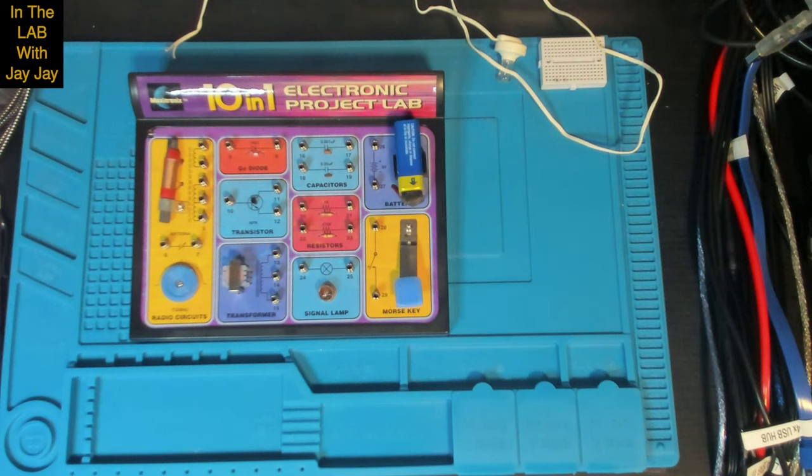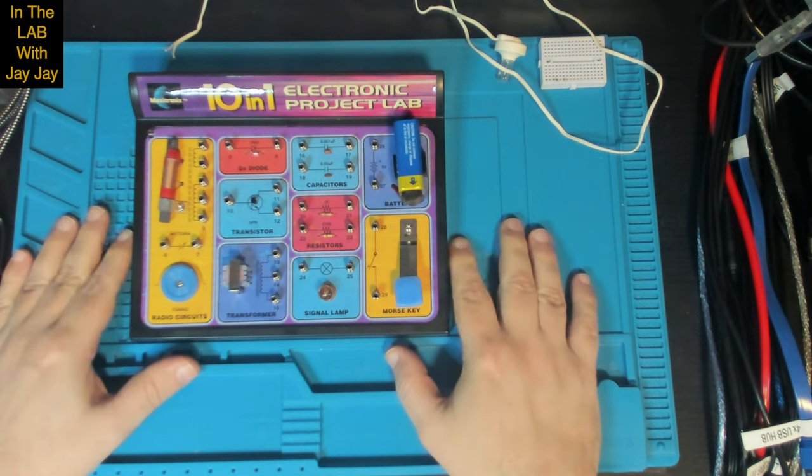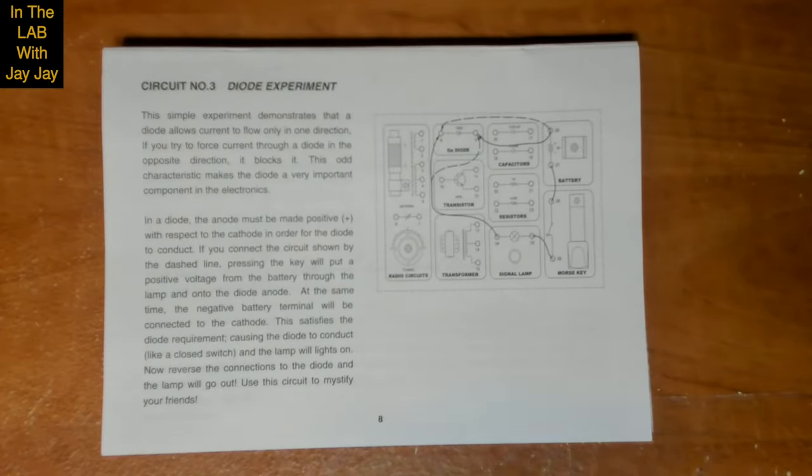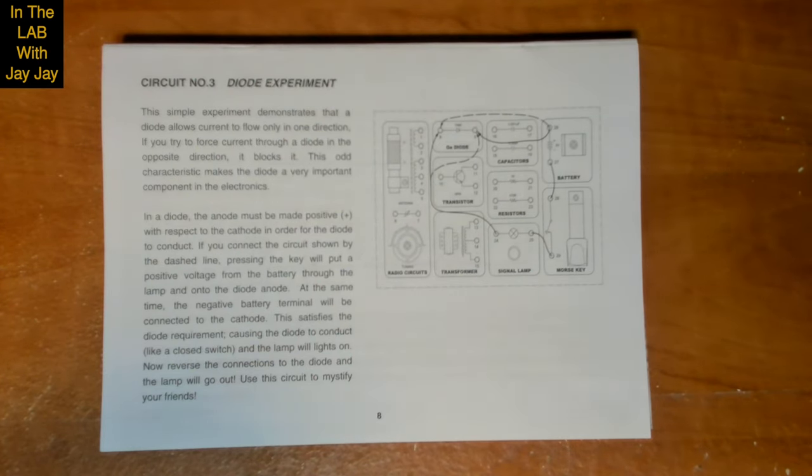Hi there, so here we are in the booth looking at our project lab. Now I suppose first thing first, we might as well pop you over to the book cam and let's have a look at the manual. So this is circuit number 3, the diode experiment.